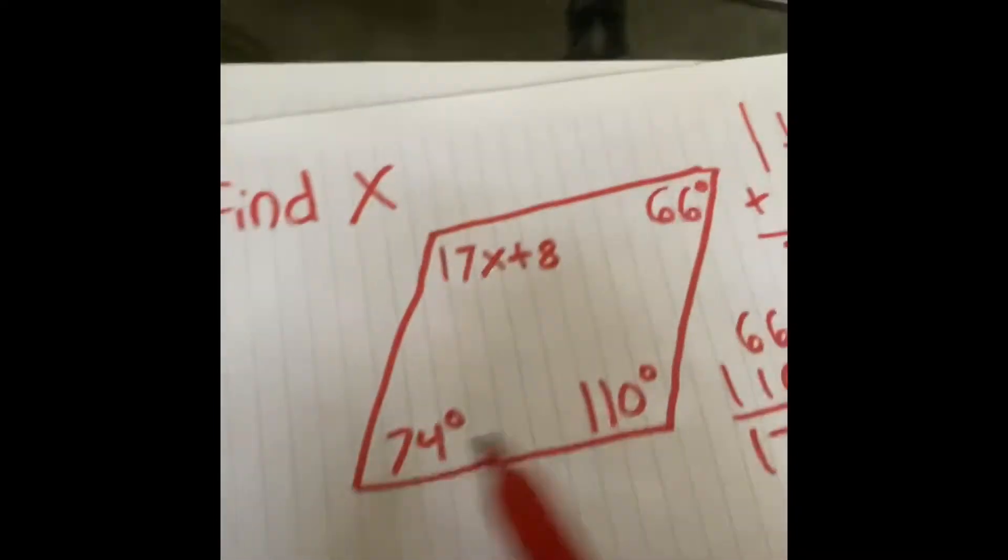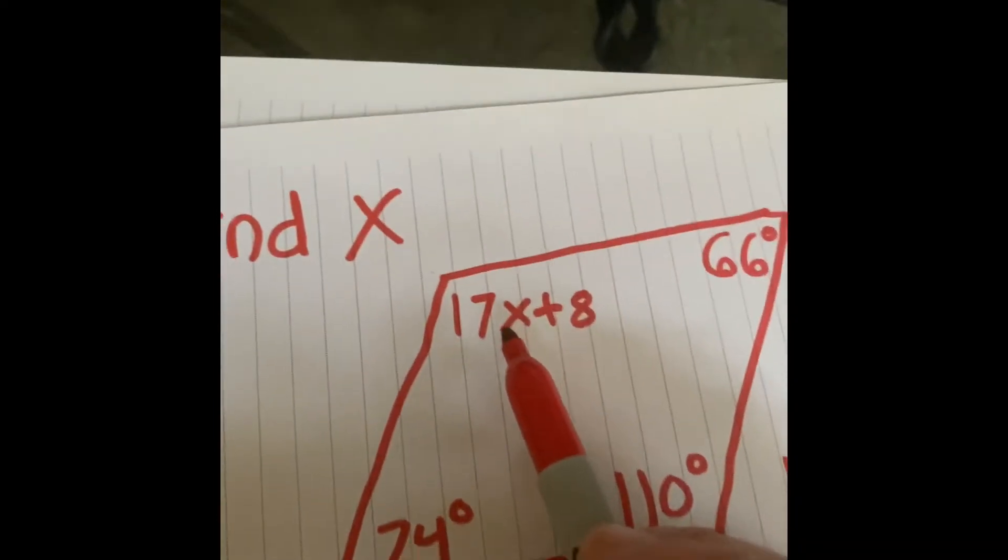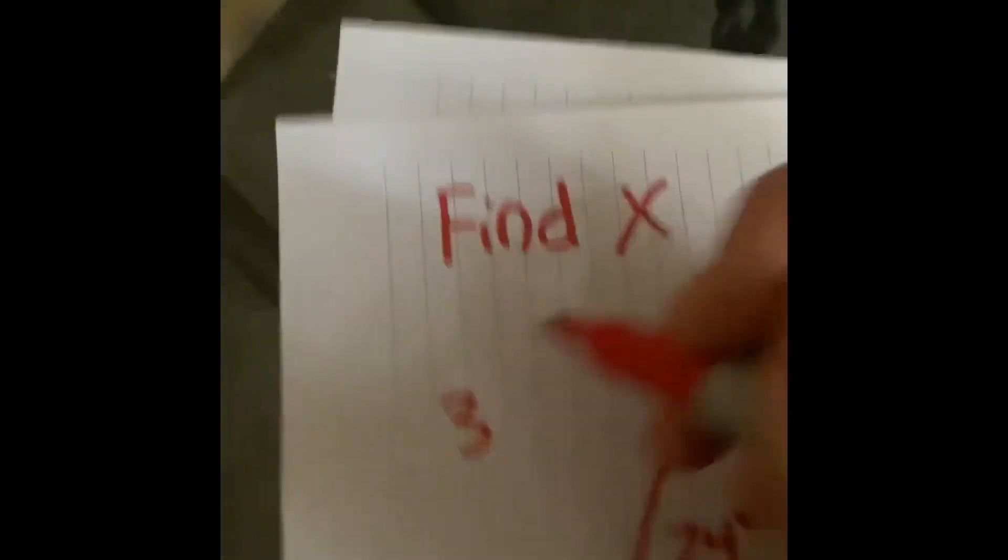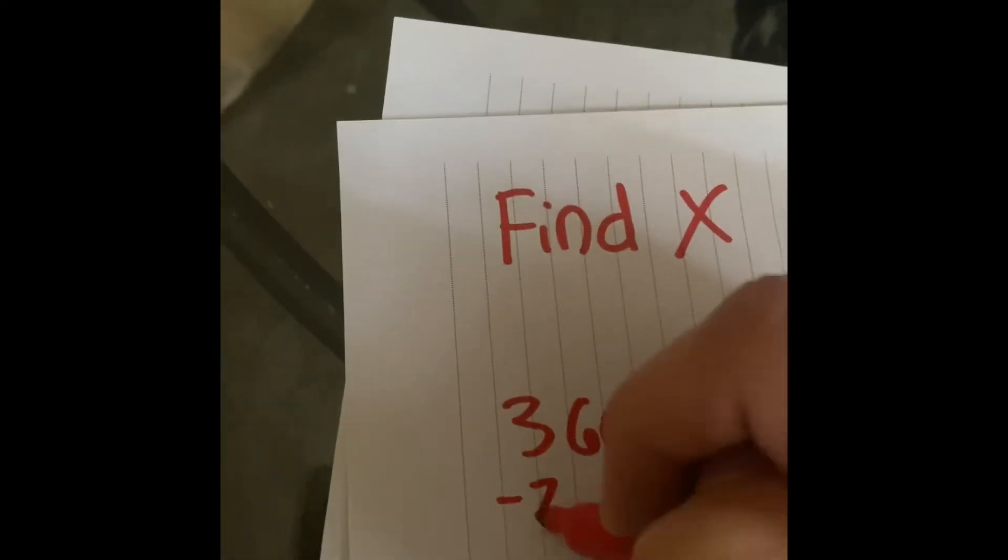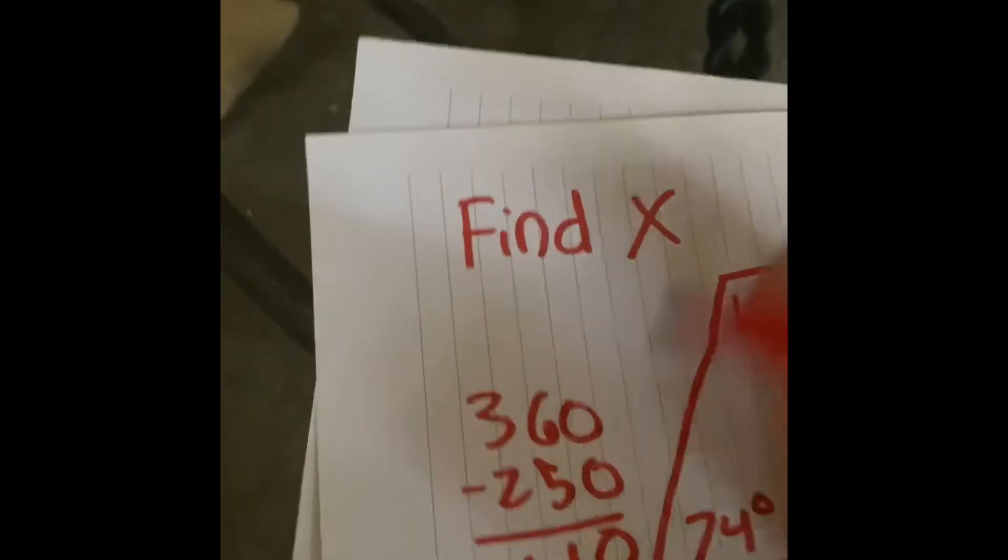So I'm going to do, let's do it up here. 176 plus 74 is 10, 14, 15, 250. So now I know these three equal 250. So I know this needs to equal 360 minus 250, which if I do that, I find is 110.